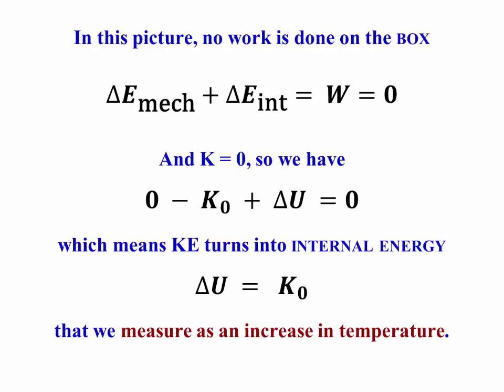In this picture, no work was done on the box. That is, the total mechanical and internal energy still has not changed, but the kinetic energy and the mechanical energy has changed. It's negative, so we'll have negative K naught plus U equals zero, so that the internal energy change is equal to the initial kinetic energy. That change in the internal energy is what we measure as an increase in temperature. That is, the thing becomes hotter.